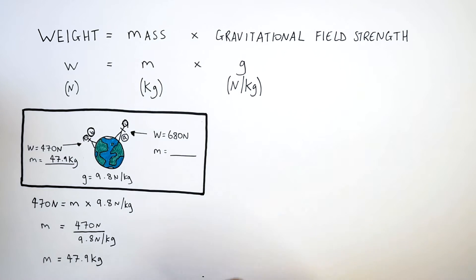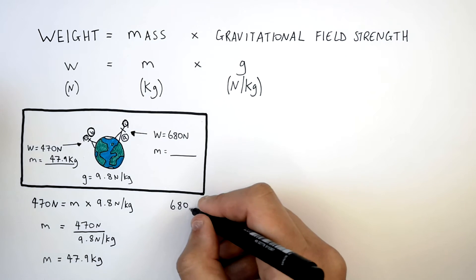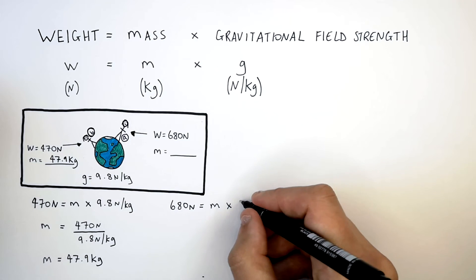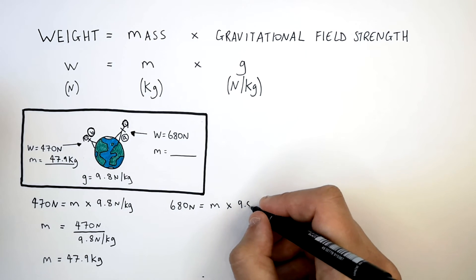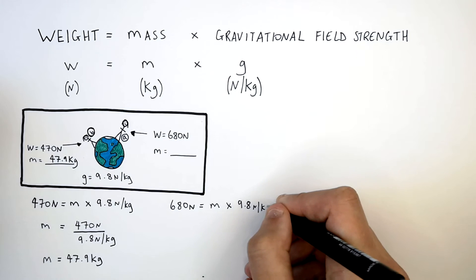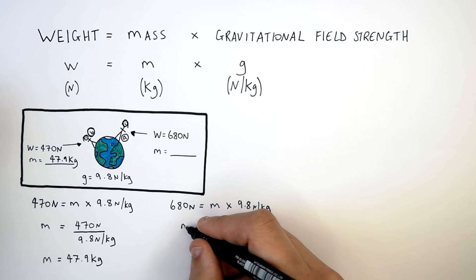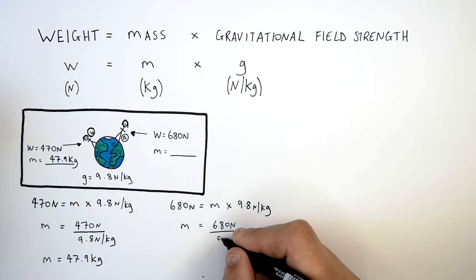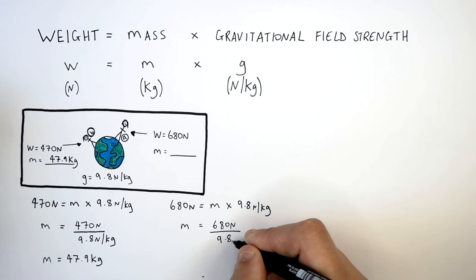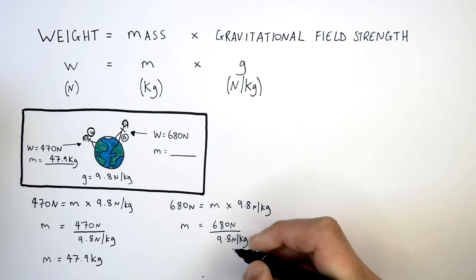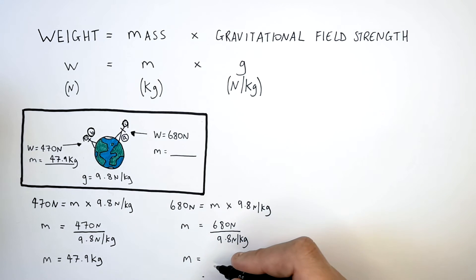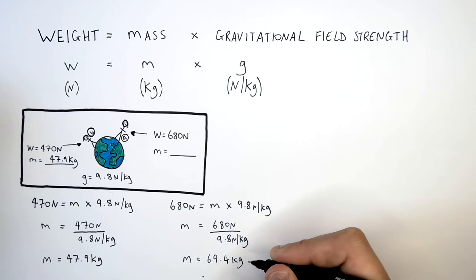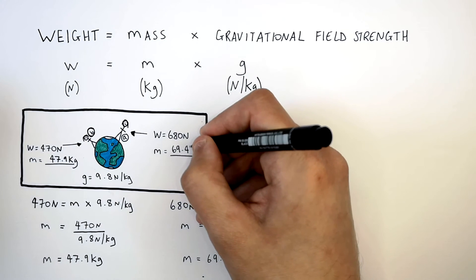Person A's weight is 680 newtons. Substituting in the data: 680 newtons equals mass times 9.8 newtons per kilogram. Rearranging the equation for mass: mass equals 680 newtons divided by 9.8 newtons per kilogram, which gives you a mass of 69.4 kilograms.